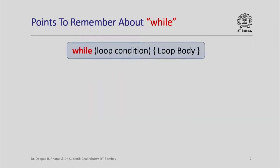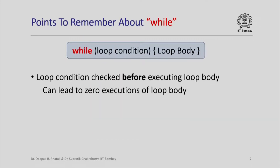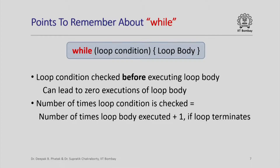The key points to remember about while loops in C++ are that the loop condition is checked before executing the loop body. So if the loop condition is false the very first time it is checked, the loop body will not be executed at all. If the loop indeed terminates, the number of times the loop condition is checked is exactly one more than the number of times the loop body is executed. This additional check is the last one, when the condition evaluates to false and you exit without executing the loop body.